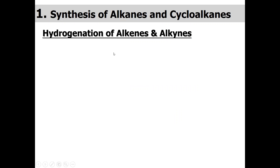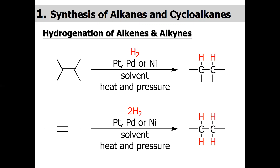The first reaction is hydrogenation of alkenes and alkynes. Alkenes and alkynes are basically unsaturated hydrocarbons. In alkene we have a carbon-carbon double bond, or generally one degree of unsaturation, while in alkyne we have two degrees of unsaturation between two carbon atoms — two pi bonds and one sigma bond.